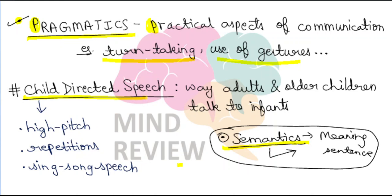Another concept is child-directed speech. Most of you must have experienced this — when we talk to young children, our voice goes to a very high pitch, we tend to repeat the same things again and again in a sing-song type formation. Child-directed speech is the way that adults and older children talk to infants. It is important because if you speak too fast, infants will not be able to capture the essence of what you are saying. The high pitch also helps them to pay attention to what you are speaking. So child-directed speech is also an important component of language.